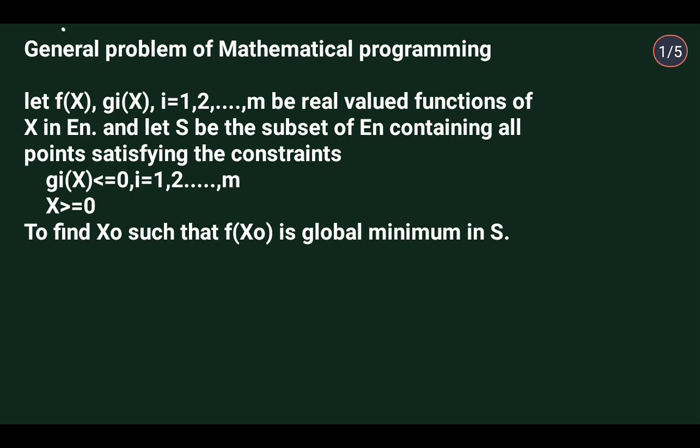E_n is n-dimensional Euclidean space. We will define real valued functions f of x, g_i of x — that is g1, g2, ... gm. We will define a real valued function. This subset S will contain some points x which satisfy g_i of x is less than or equal to 0 and x is greater than or equal to 0.